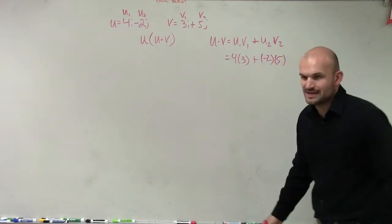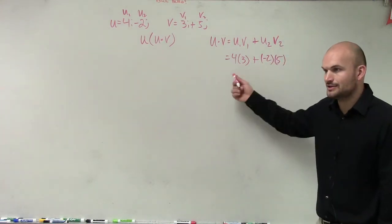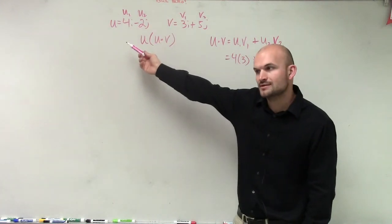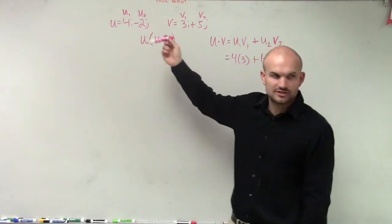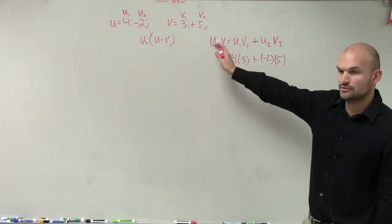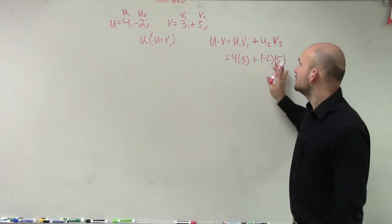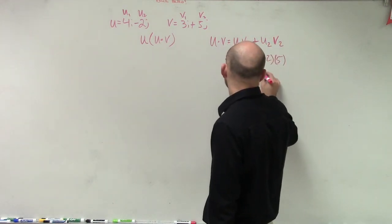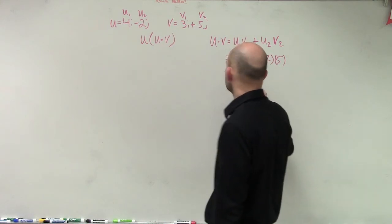So do you guys understand why it's just those? It's not the i's and j's. If you want to convert it to component form, do that. But just make sure your coefficients are going to be your u1 and v1 and u2, v2, right? Don't start throwing in the i's in there, i's and j's. So therefore, we end up having 12 minus 10, which equals 2.